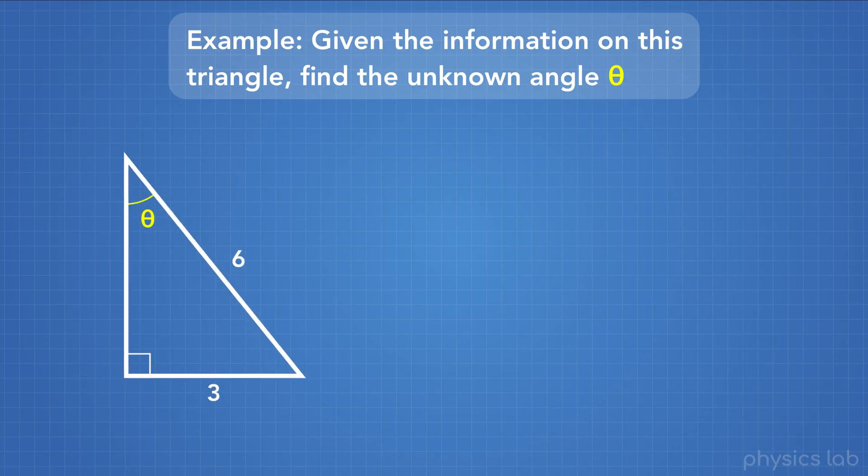Given the information on this triangle, find the unknown angle theta. One side we're given is the hypotenuse. The other side is opposite from the angle theta, and that's the opposite side.